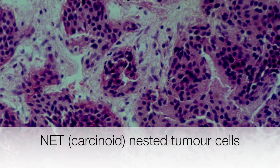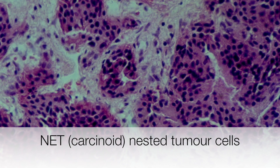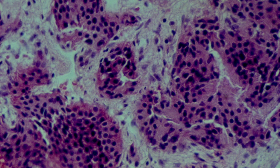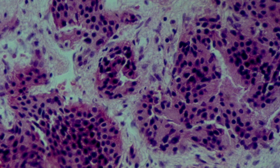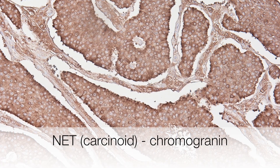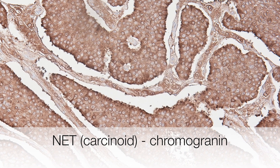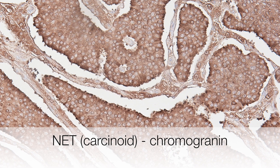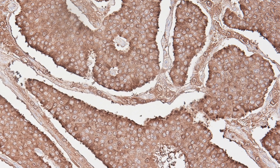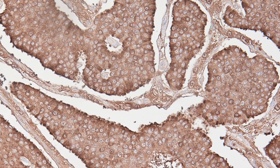On higher power, the nested appearance of the neuroendocrine tumour or carcinoid can be appreciated. Here is the chromogranin stain of this particular tumour, which is clearly positive, confirming that the tumour is a neuroendocrine or carcinoid tumour.